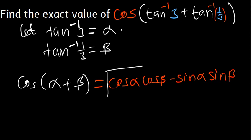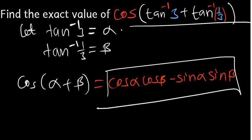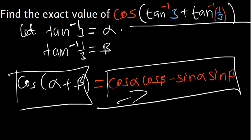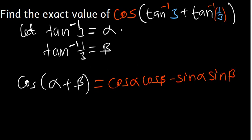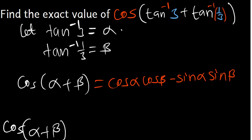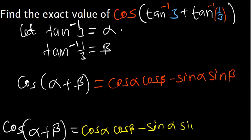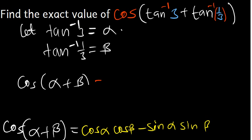So cos(α + β) expands to cosα·cosβ − sinα·sinβ. If we find the exact value of this expression, that will be the answer for the whole problem. The angles α and β will help us find the values of cos and sin needed.